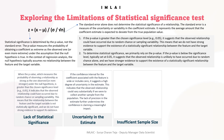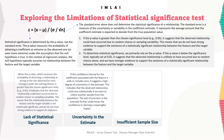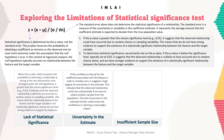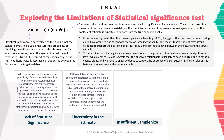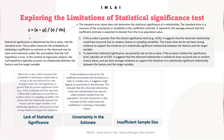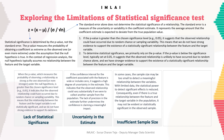The third limitation is insufficient sample size. In some cases, the sample size may be too small to detect a meaningful relationship between the variables. With limited data, the statistical power to detect significant effects is reduced. Consequently, even if there is a true relationship between the feature and target variable in the population, it may not be evident or statistically significant in the observed sample.